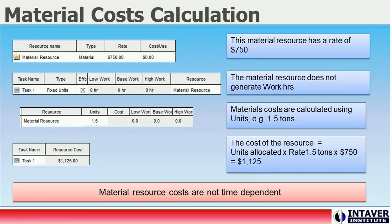Another type of resource is material costs. Material costs are not based on work and therefore not time-dependent. Material resource costs are calculated on a rate per unit — for example, in a particular activity you could have a material cost of x amount per ton. The material resource is assigned to an activity with a unit value, and the cost is then allocated to the activity based on the rate and the unit value.